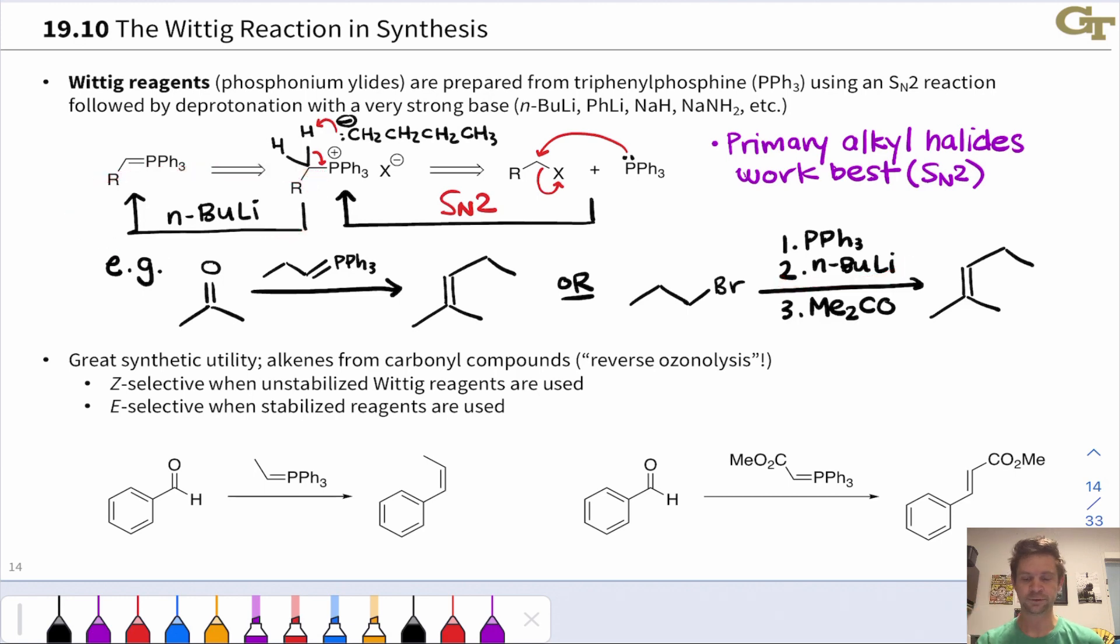So these first two steps establish the phosphonium ylid and then the third step we add the carbonyl compound. In this case this is acetone and this gives rise to the product. So these three carbons came from the alkyl halide and these three carbons came from the acetone or carbonyl substrate.